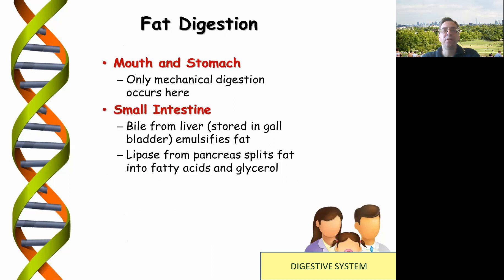The third type is fat digestion. This uses an enzyme called lipase secreted from the pancreas, which splits fat into fatty acids and glycerol. I've covered more on carbohydrates, sugars and peptides in one of my other talks. Thank you very much.